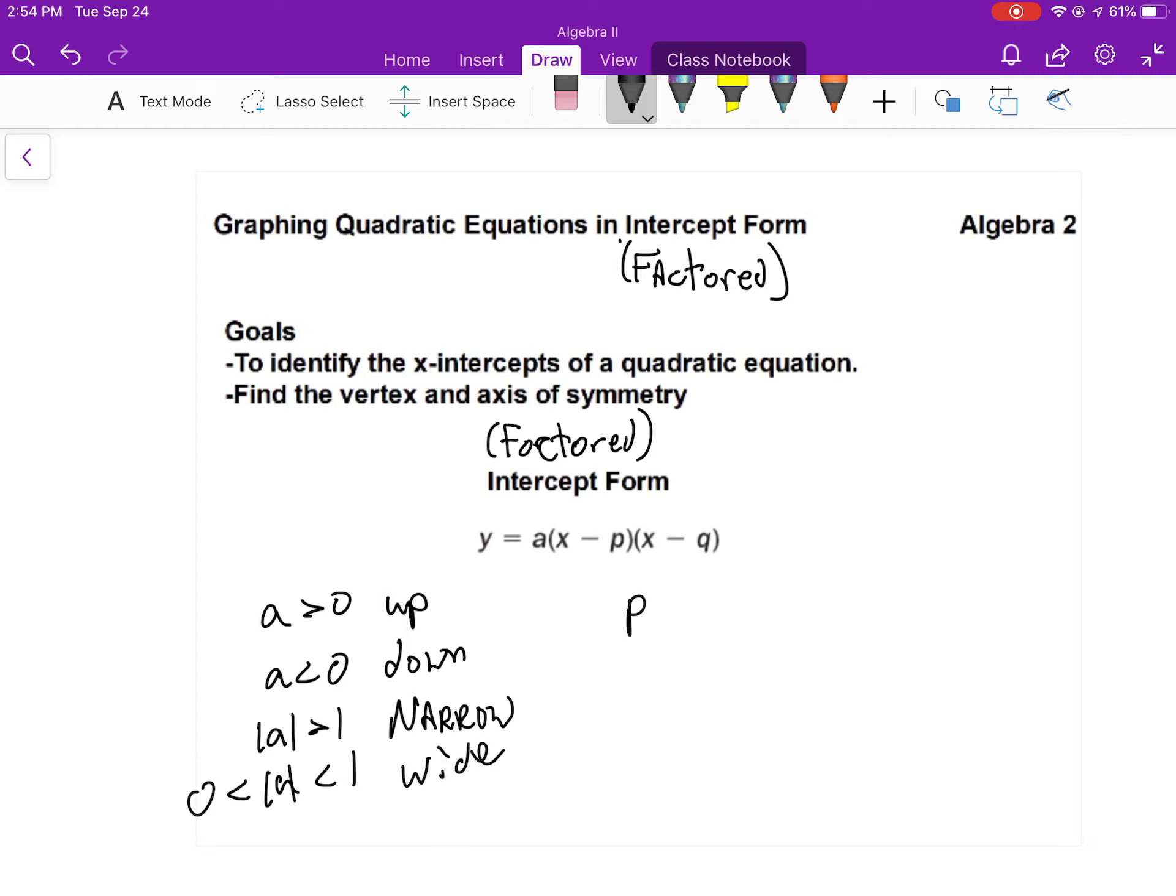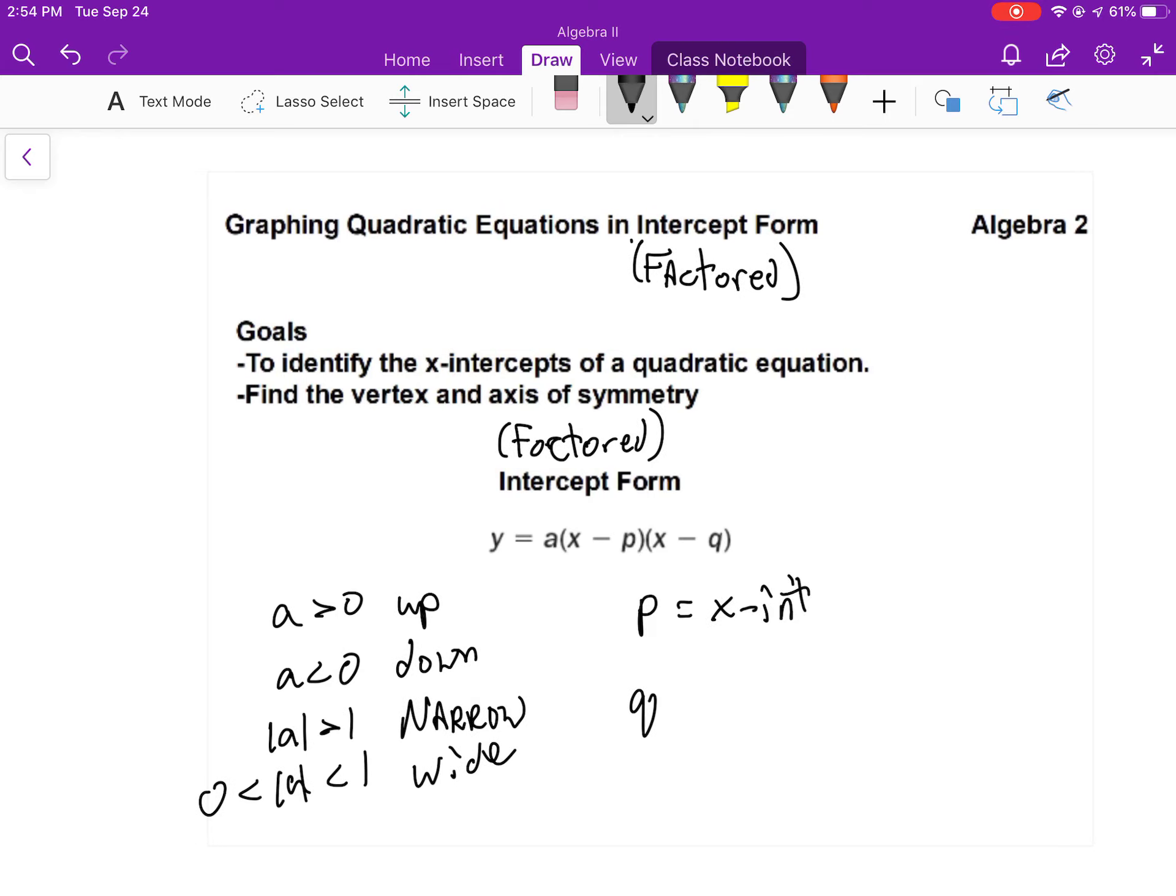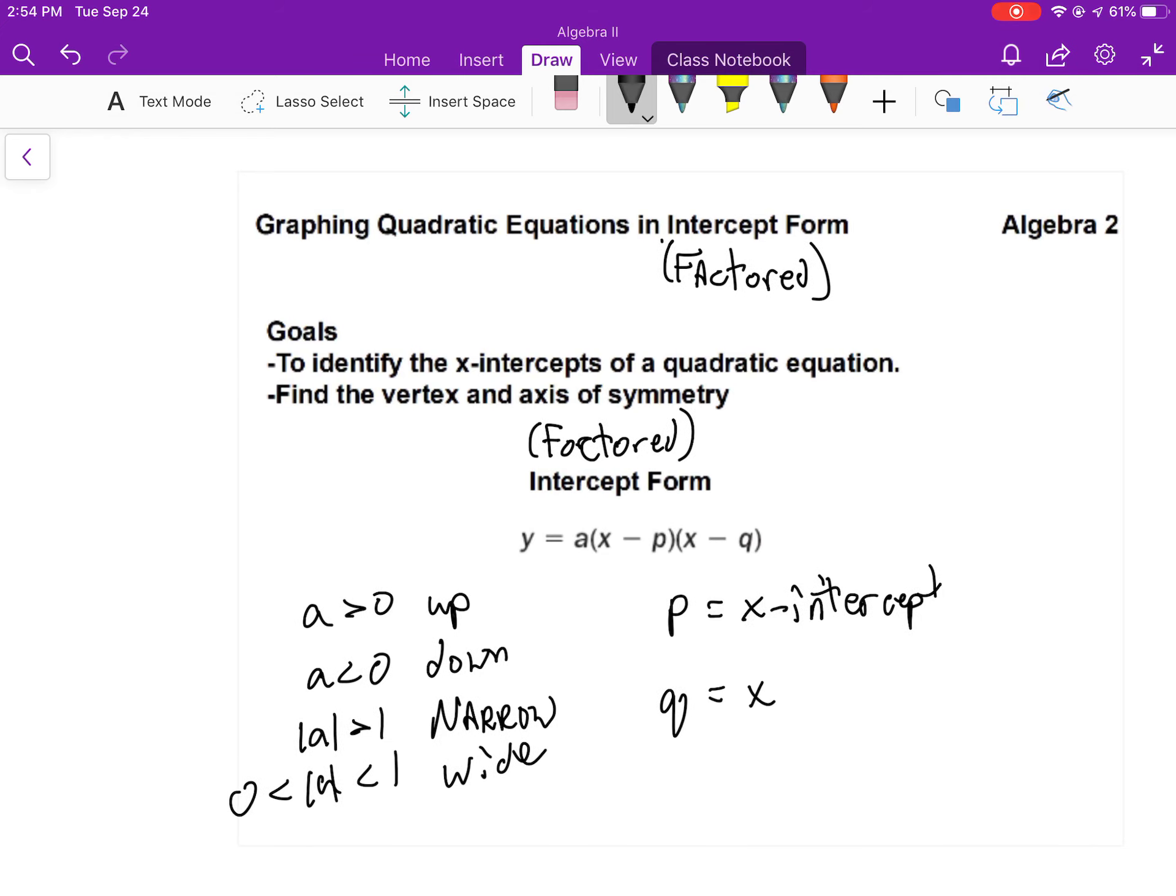But now P and Q stand for the two or possibly the same x-intercept. As an ordered pair, it would be P, 0, and Q, 0.